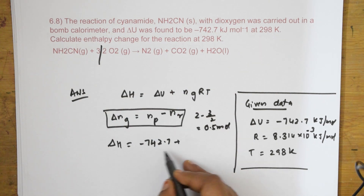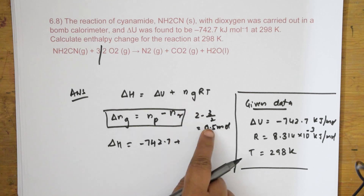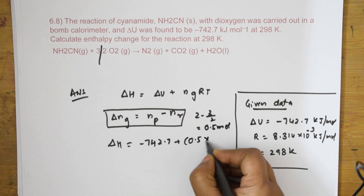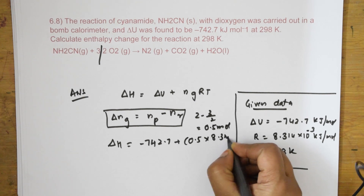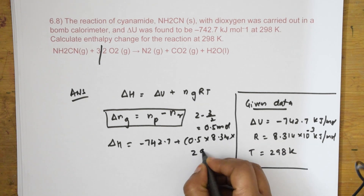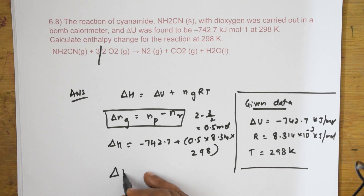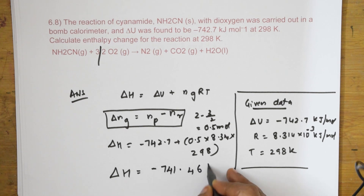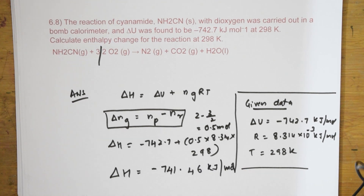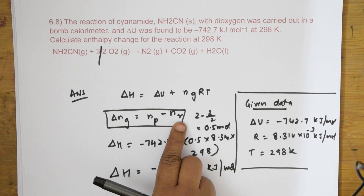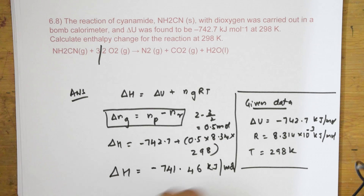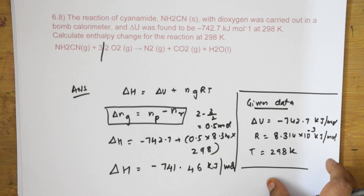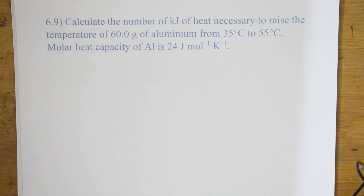Δng = 0.5; R = 8.314 × 10⁻³; T = 298 K. Solving: ΔH = −742.7 + 0.5 × 8.314 × 10⁻³ × 298 = −741.46 kJ/mol. That is your answer for question 6.8.